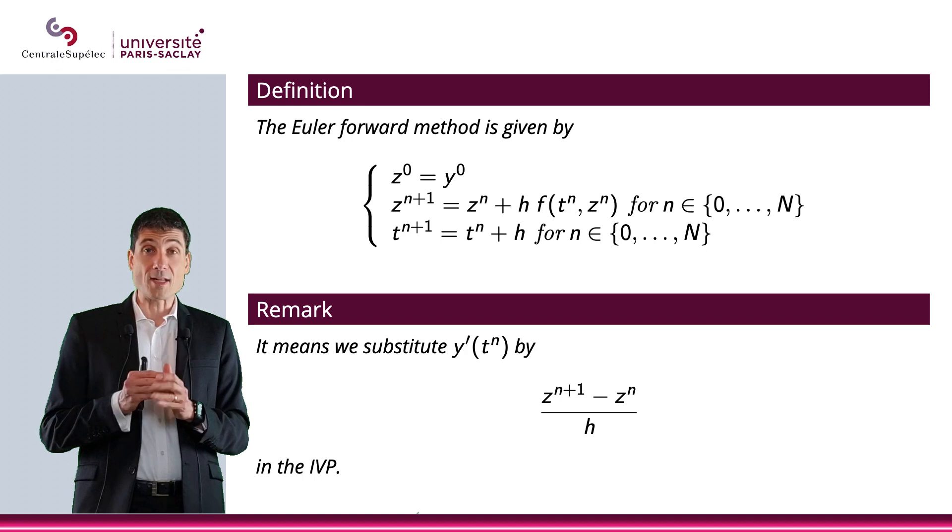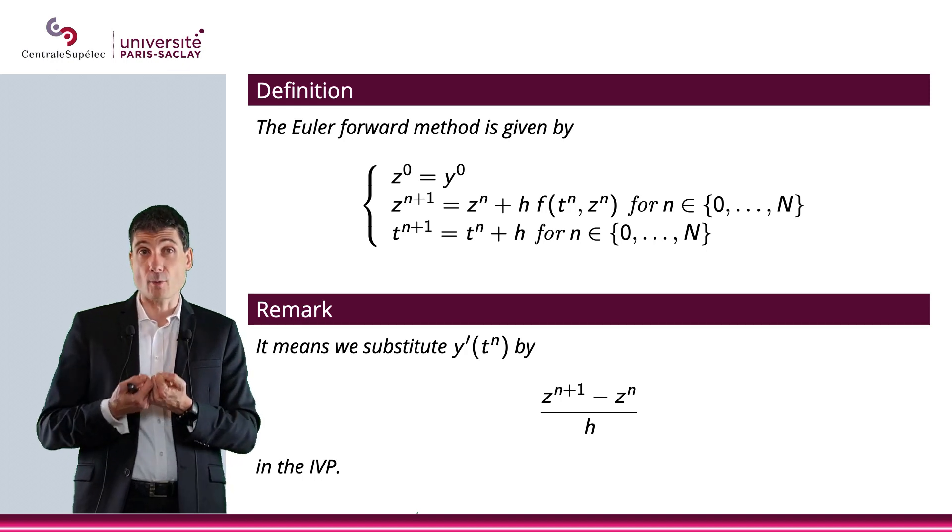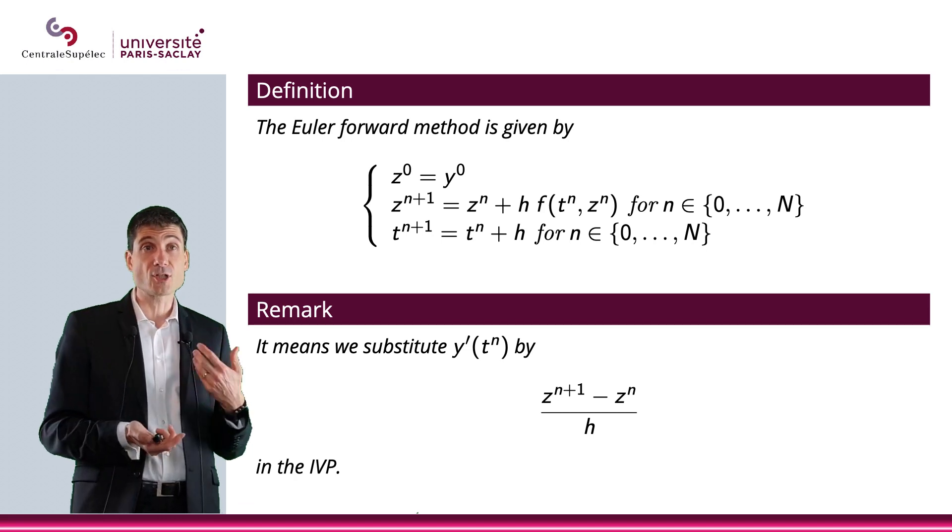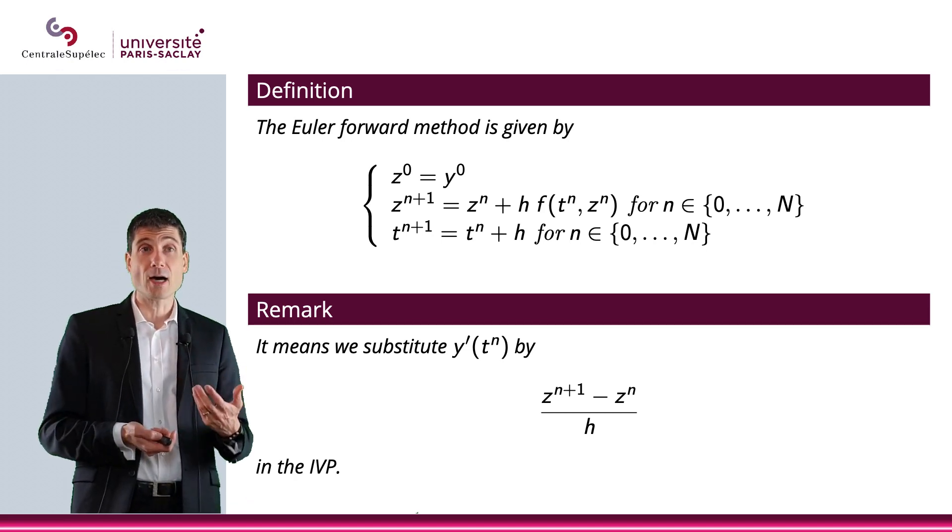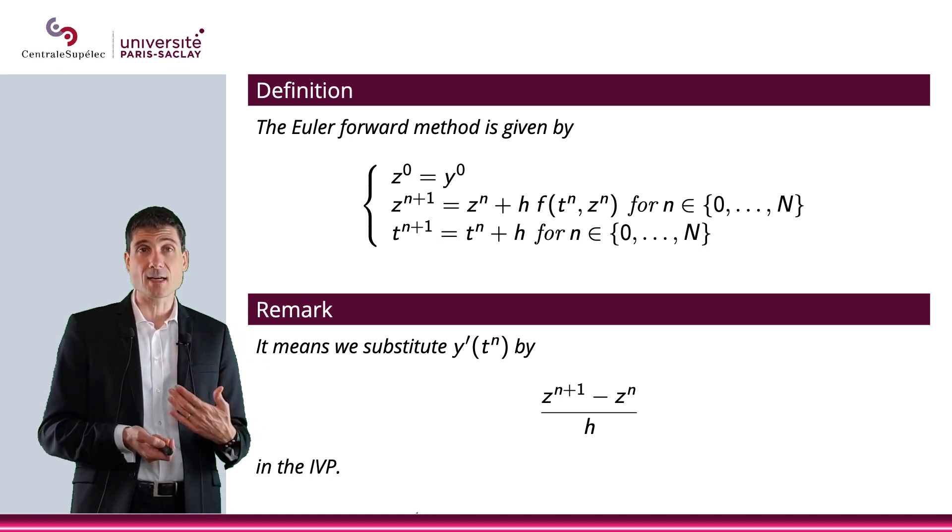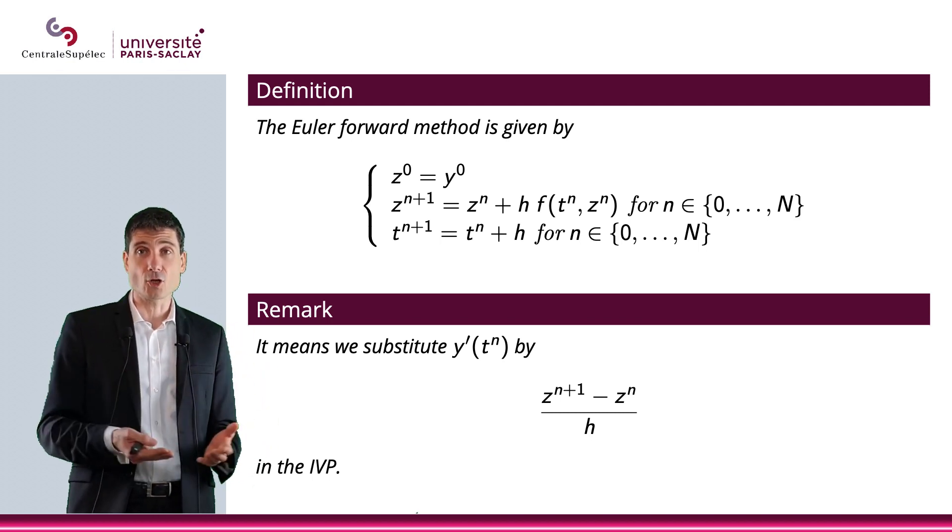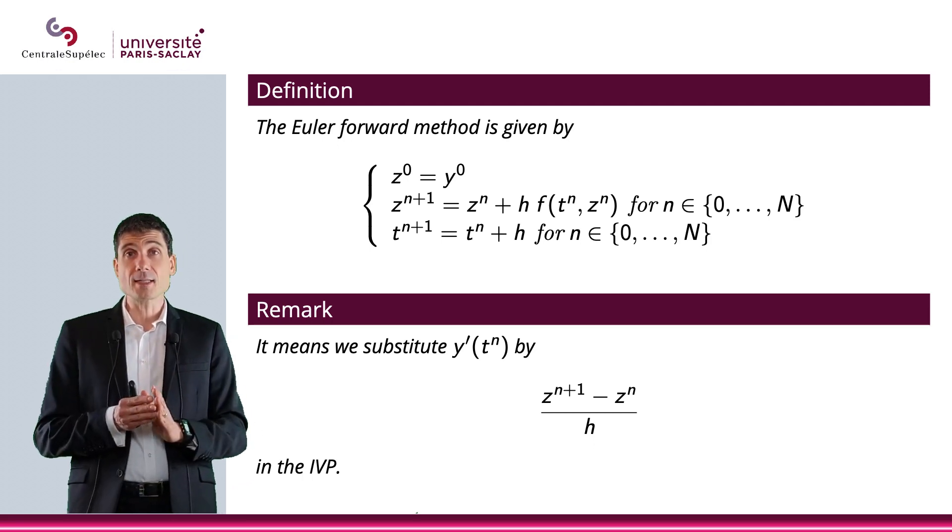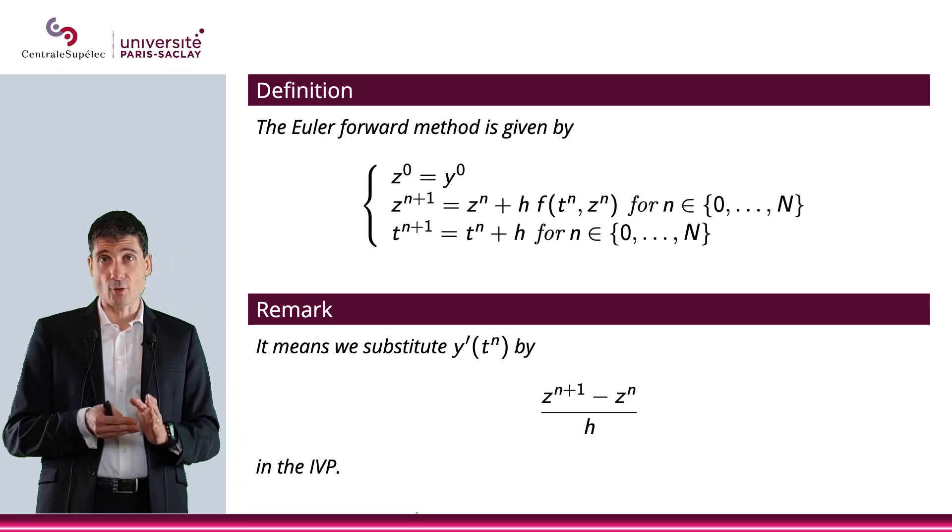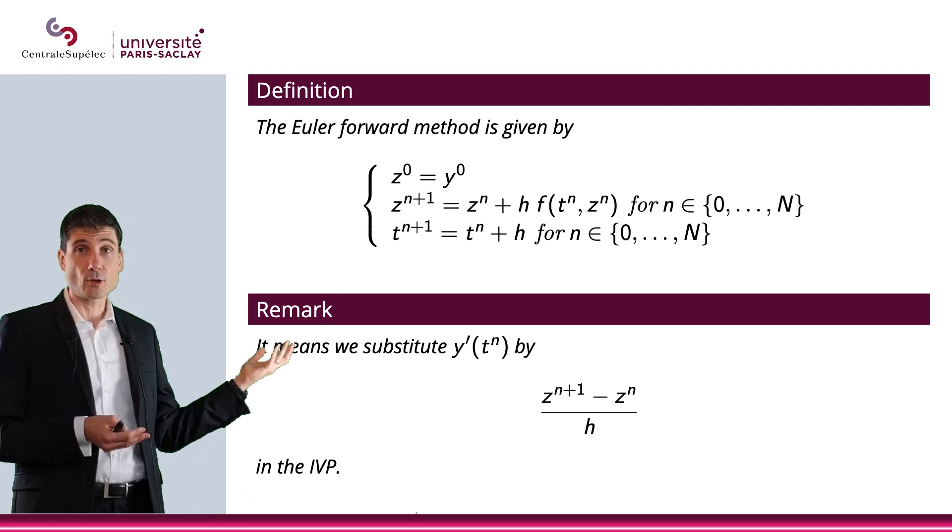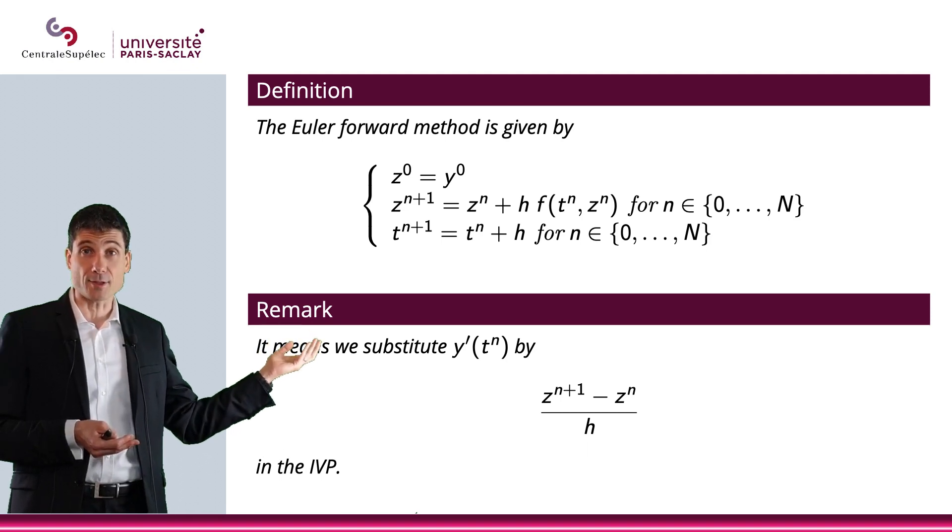Now, what it means when you're basically doing the computations on your ODE is that you substitute Y prime of Tn by Zn plus 1 minus Zn over h in the initial value problem. By the way, you've noticed, and this is the very beginning of this chapter, all of the indices are actually written as superscripts. These are not powers, not Z raised to power n. It is an index.